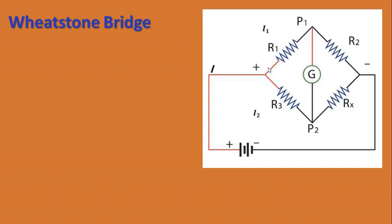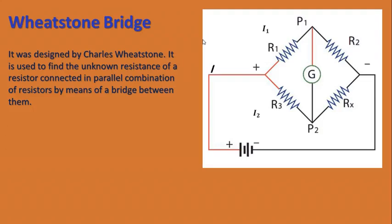And if there is no potential difference between P1 and P2, no current can flow through this bridge. The galvanometer connected to the bridge will show deflection if there is any current, and if the potential at P1 and P2 is the same, the galvanometer will show zero deflection. So what we have to do is arrange these resistors such that P1 and P2 are at the same potential, so no current flows. Wheatstone Bridge was designed by Charles Wheatstone and it is used to find the unknown resistance by means of a bridge between parallel combinations of resistors.